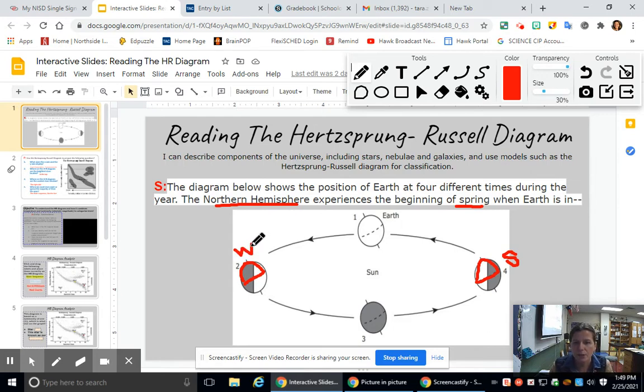So to understand spring and fall which would be here, I need to know what season comes after summer but before winter. So I go summer, fall, winter, spring. So spring would be in position three in the northern hemisphere. So let me back step okay and put fall here in the northern hemisphere.